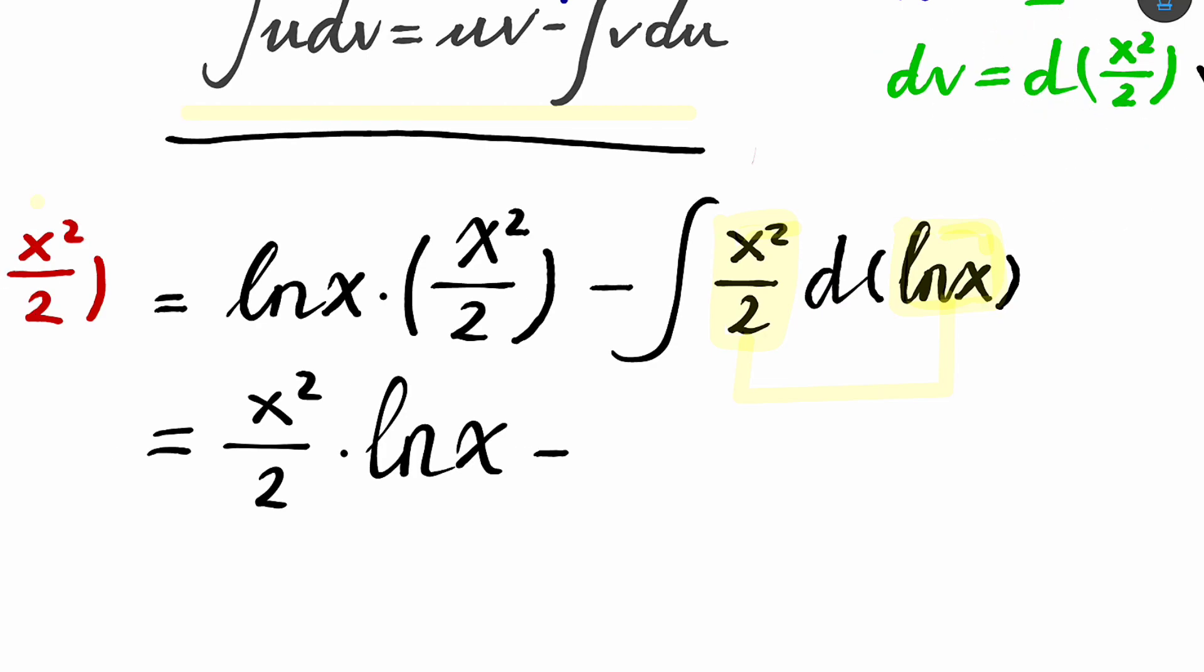So now, we do some changes. We notice that the derivative of the natural log of x is 1 over x. The d natural log of x is equal to 1 over x, and then dx. So d of natural log of x is 1 divided by x, then times dx.